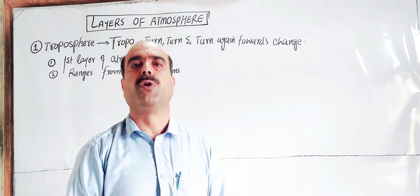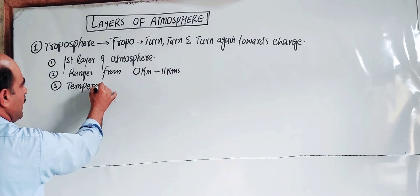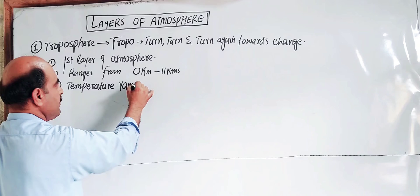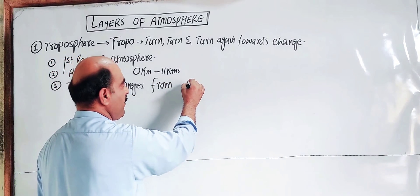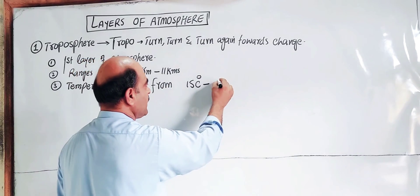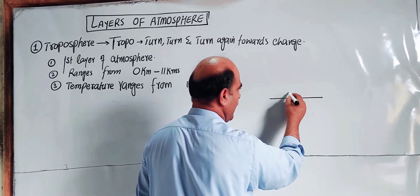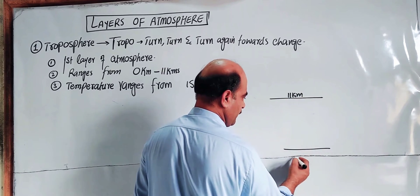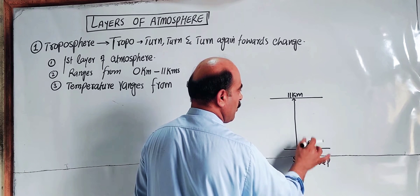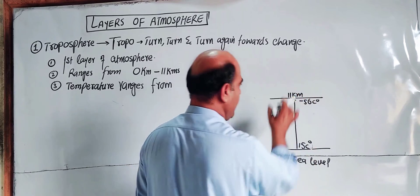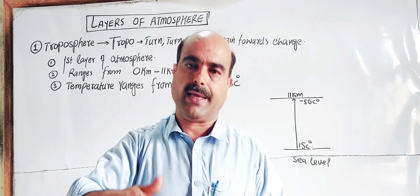In the troposphere, the temperature ranges from 15 degrees Celsius at sea level down to minus 56 degrees Celsius at 11 km altitude. This change in temperature with change in height is called the lapse rate.